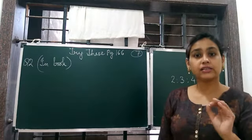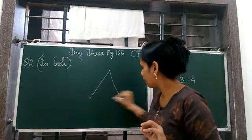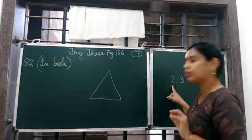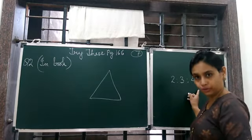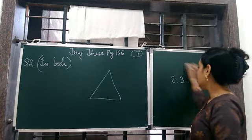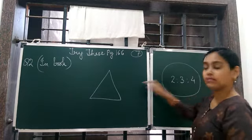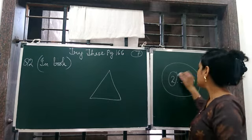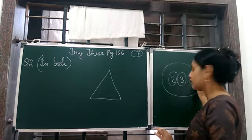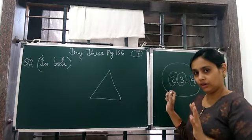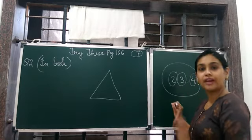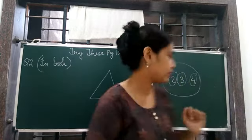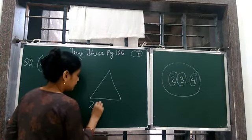The question says there is a triangle whose angles are in the ratio 2 is to 3 is to 4. That means the angles in the triangle, one is ratio of 2, second one is the ratio of 3, third one is the ratio of 4. Now we have to find the measure of each angle. So what is given? Ratio is given.